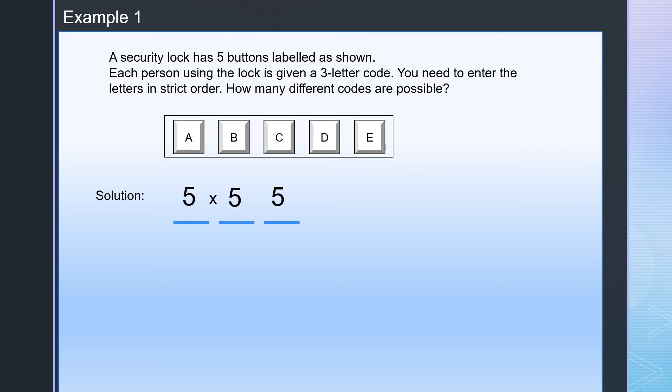And these 5 choices will match each of the previous 25 choices. So all together, 5 times 5 times 5. We have 125 different codes.